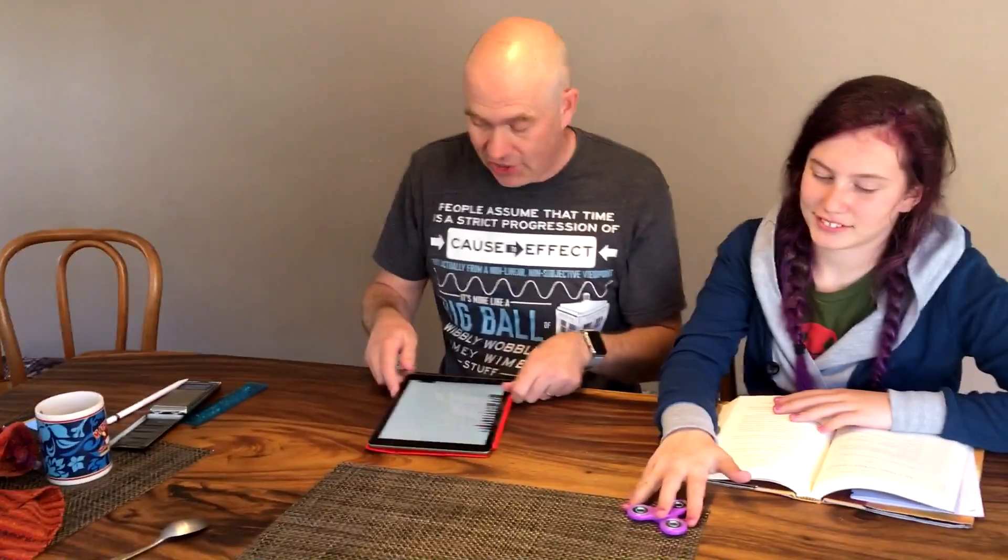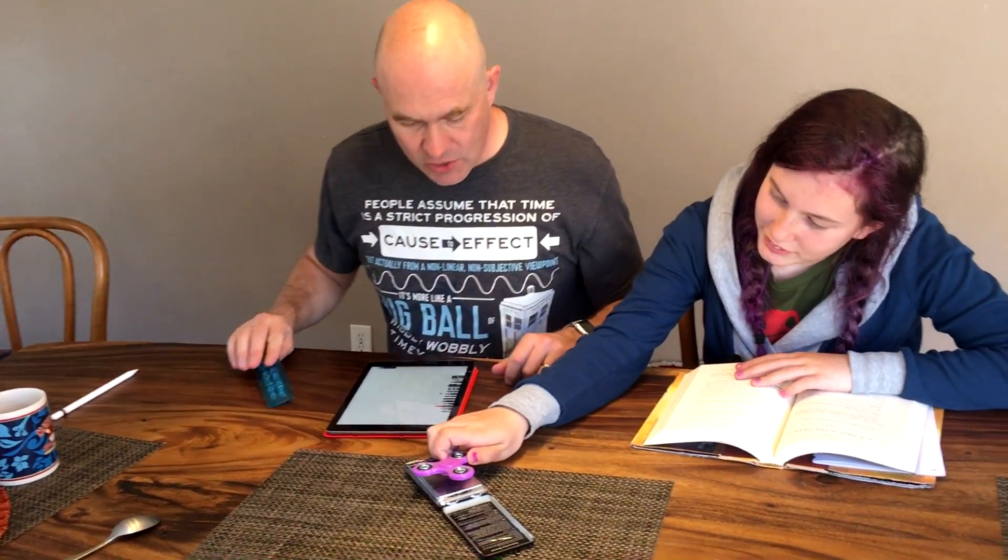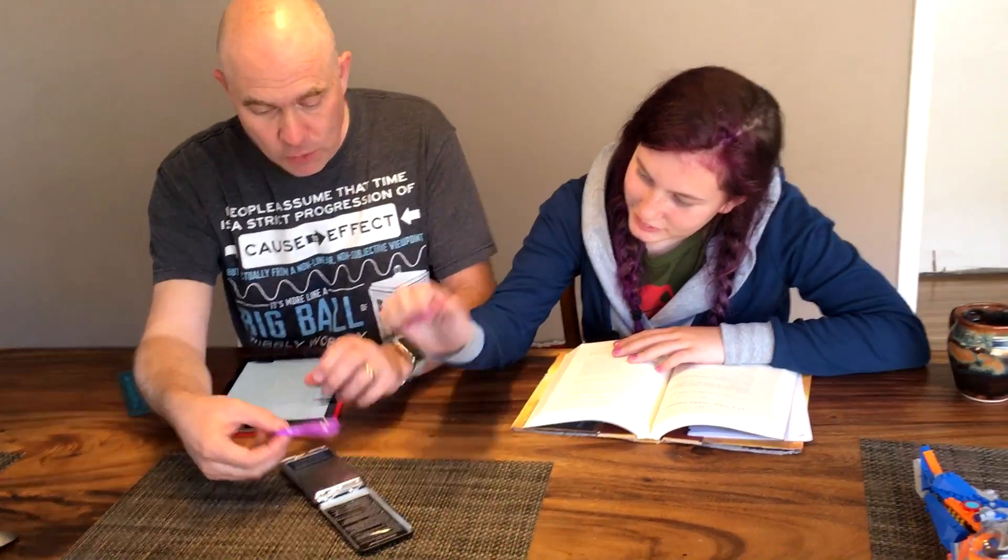I'm going to use math and measurements. So first of all, we need to know how heavy this is, right? Because if we spin this fast enough, these things will overcome the strength of the plastic and the thing will fly apart.